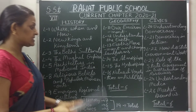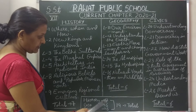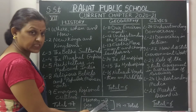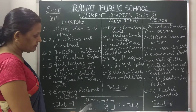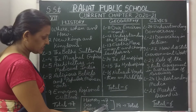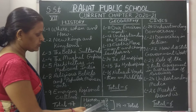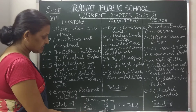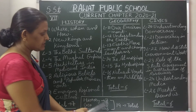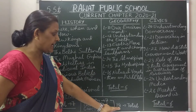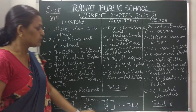So, we will learn in history a total of 7 chapters, in geography a total of 6 chapters, and in civics a total of 6 chapters. In total, 7 plus 6 plus 6, so we will learn 19 chapters.